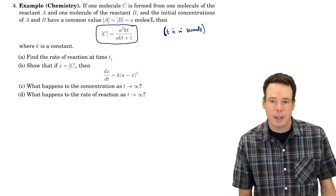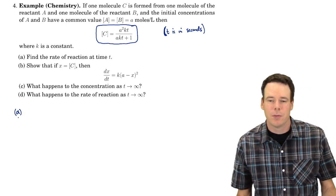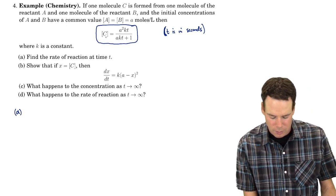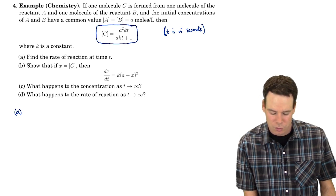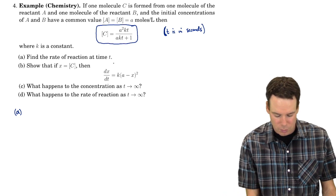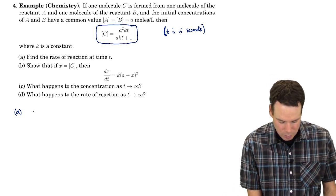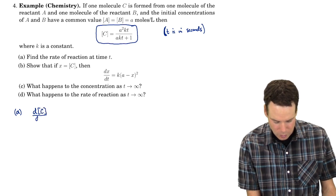Find the rate of reaction at time T. Okay, what does that mean? Rate of reaction. Well, here's our equation that tells us how our product, concentration of our product is being formed as the reaction goes on. What is the rate of reaction? The rate of reaction is just the derivative of that concentration.